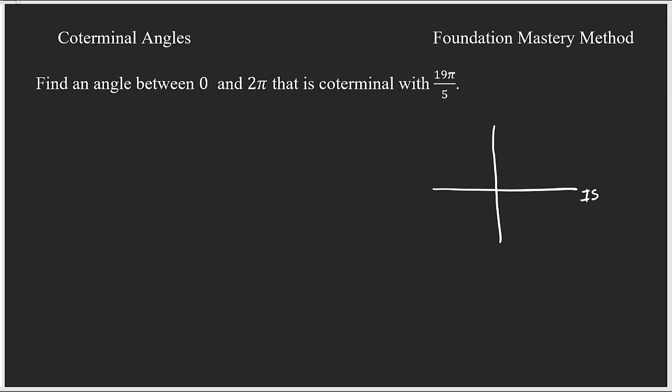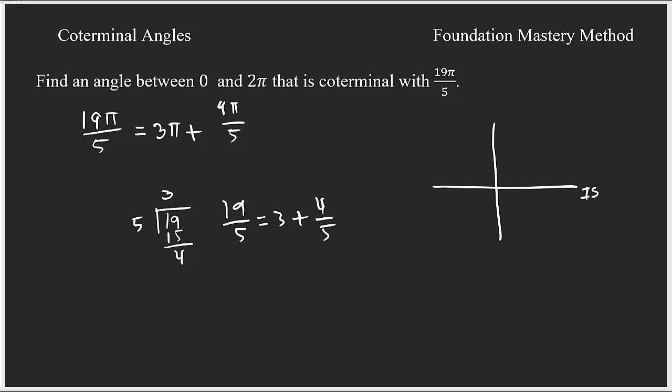Now we need to find an angle between 0 and 2π that is coterminal with 19π/5. We need to see how many full rotations are in this angle and what remains. Using division: 19 divided by 5 goes 3 times with remainder 4, so 19π/5 = 3π + 4π/5.